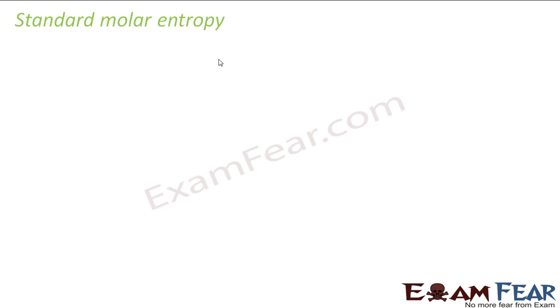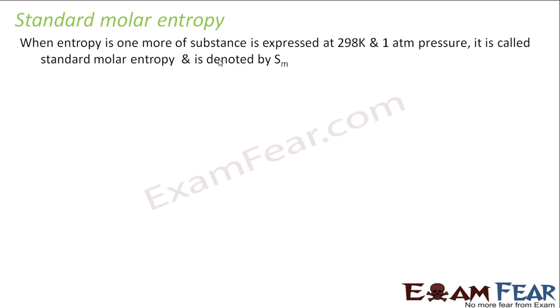Since we have learned entropy, we have to standardize it. So we have something called standard molar entropy. When entropy we talk about is at 298 Kelvin, 1 atmospheric pressure and 1 mole of substance, then this is called standard molar entropy. It is denoted by SM - molar entropy, because you have taken 1 mole of substance at the standard temperature, 1 atmospheric pressure, 298 Kelvin.